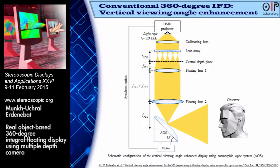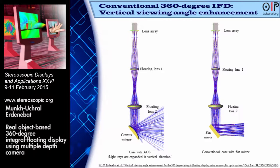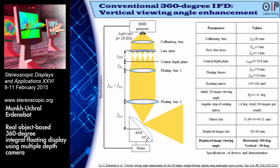Thereafter, we proposed a method to enhance the vertical viewing angle using an anamorphic optic system, which is a vertically curved convex mirror instead of a simple flat mirror. The convex mirror can expand the light trace more widely in the vertical direction, so the vertical viewing angle can be enhanced significantly. In the experiment, the vertical viewing angle was increased successfully up to approximately 50 degrees.